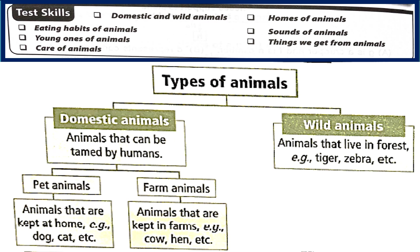Within domestic animals we have two categories. One is pet animals and the other one is farm animals. Pet animals are those kept at home — for example, your pet dog, cat, etc. Farm animals are those that are kept in farms — for example, cow, hen, etc.